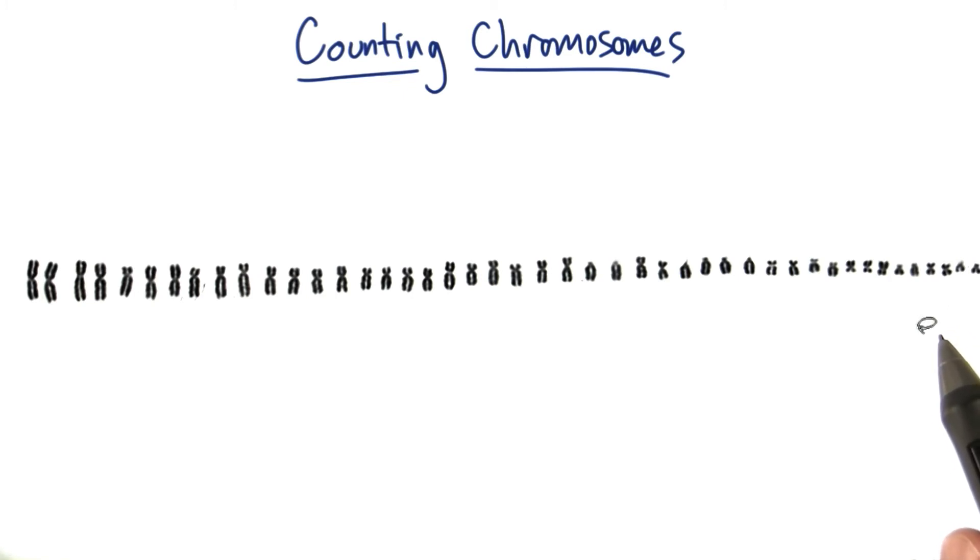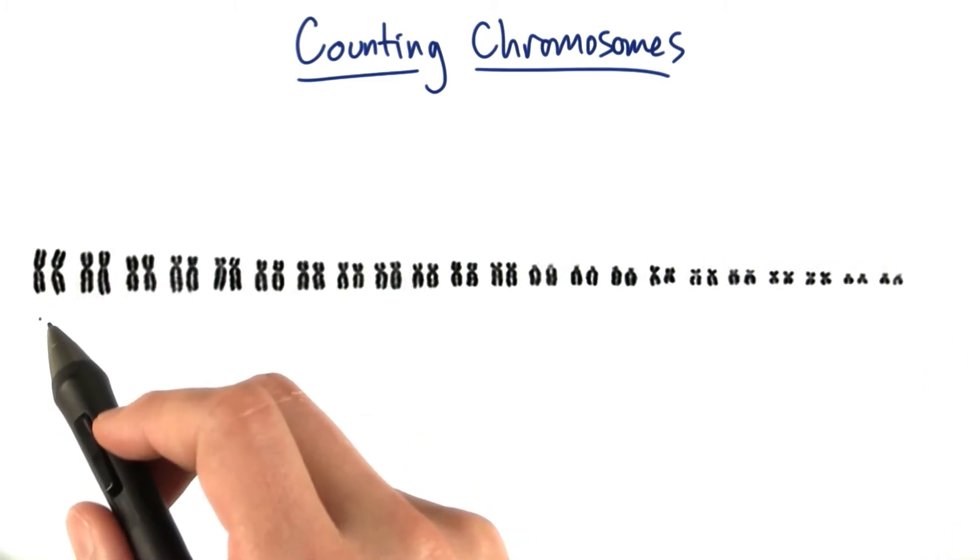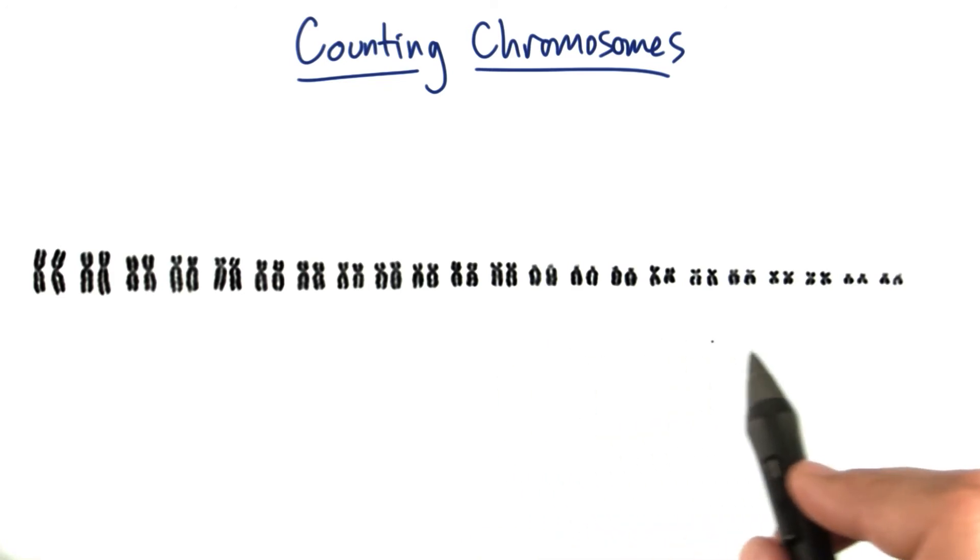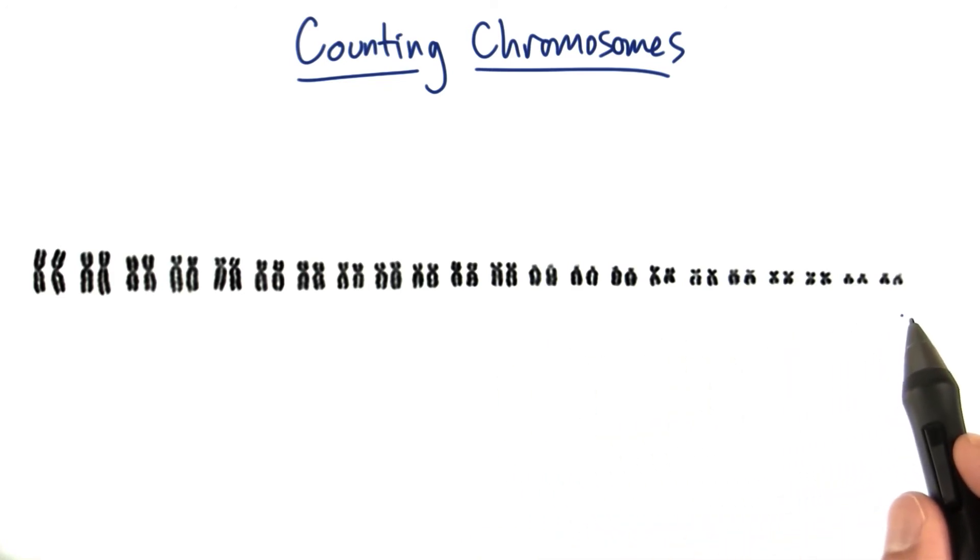But let's take a look at how scientists actually would put them in a row. So here's what it looks like if a professional scientist who works with chromosomes and knows what they're doing. If they cut and paste them and organize them, they'll get ordered in this way.